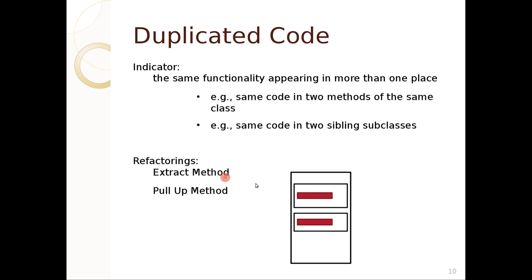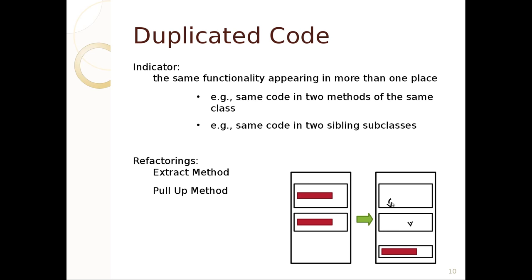Two refactorings we could use for duplicated code are the extract method — whereby we make a new method, get rid of the two duplicated code bits, and just call the new method — and the pull-up method, which is like extract method but you pull it up to the super class. So if this was duplicated functionality in two classes, we want to pull it up to the super class. The extract method is usually within the same class; the pull-up method is with inheritance.